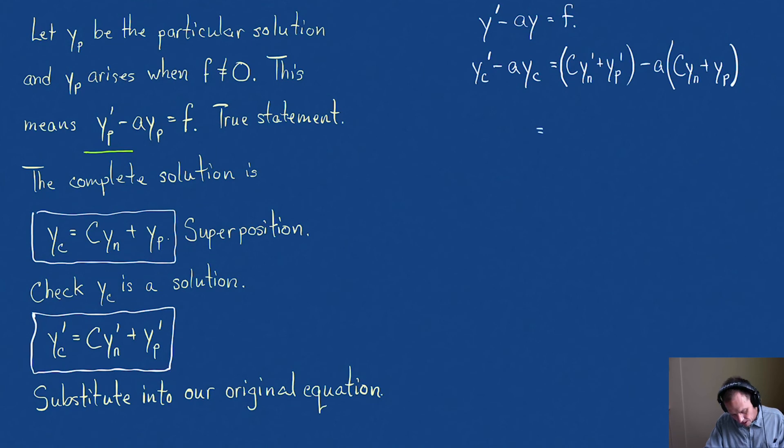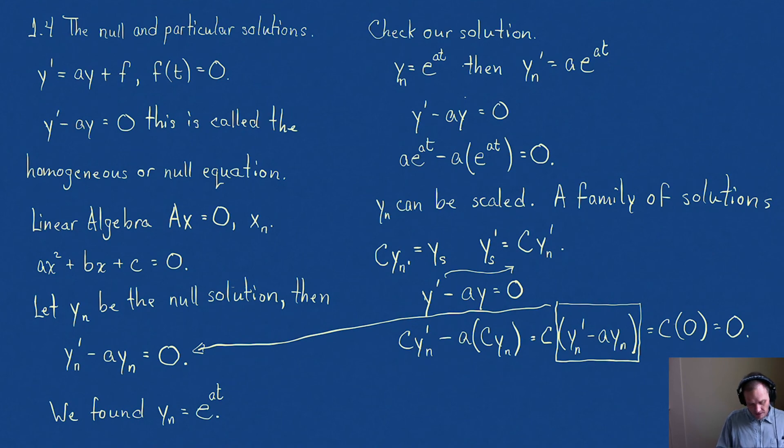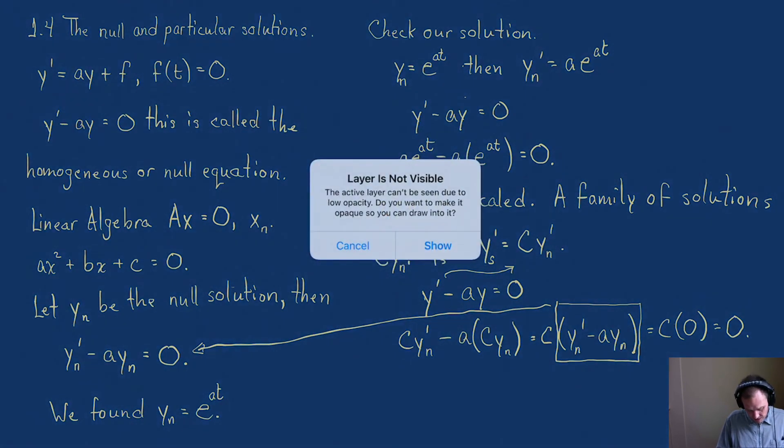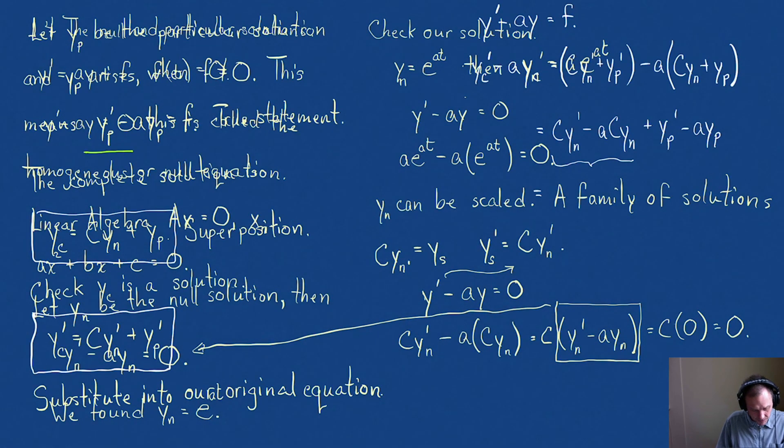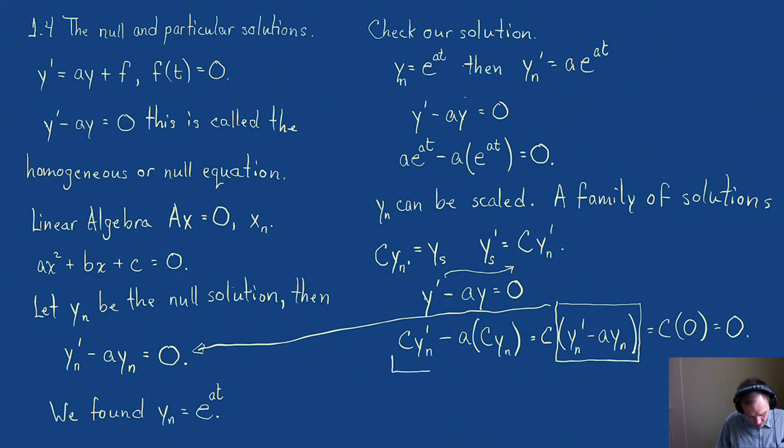Now, what does this equal? I'm going to regroup this by null and by particular solutions: Cy_n' - aCy_n plus y_p' - ay_p. Look at what we've just discovered. This first piece right here is the null equation. That is the solution. It's just zero.